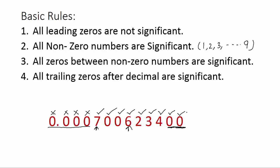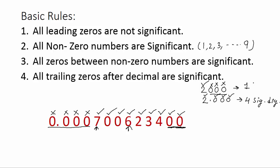Let me give you an example of how trailing zeros are not significant. Suppose we have a number like 2000. These 3 zeros are trailing zeros at the end of the number, and they are not significant. Here only the one non-zero number, 2, is significant. These 3 zeros are not significant because this whole number does not have any decimal. But if we write the same thing as 2000. with a decimal, then all 3 zeros are significant — that means this number has 4 significant digits, but 2000 without a decimal has only 1 significant digit.